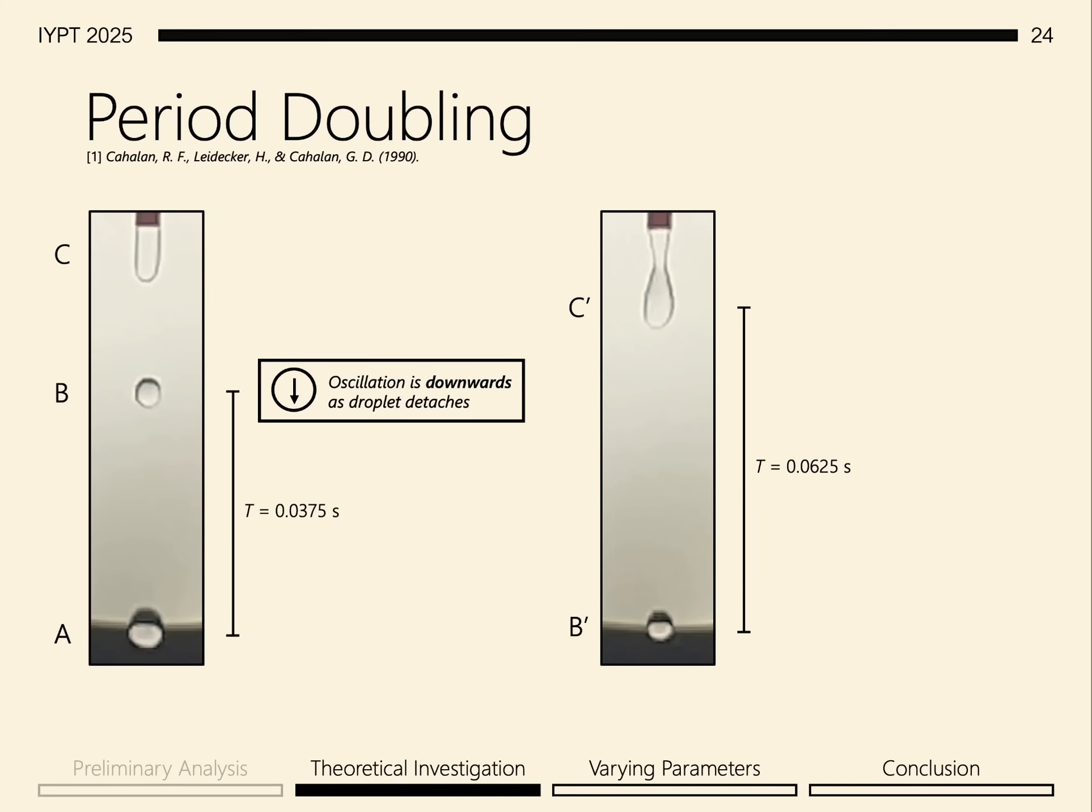For droplet B, the oscillation is in its downwards phase as the droplet wants to detach itself from the nozzle. So the oscillation gives the droplet a boost and causes it to fall off at an earlier time.